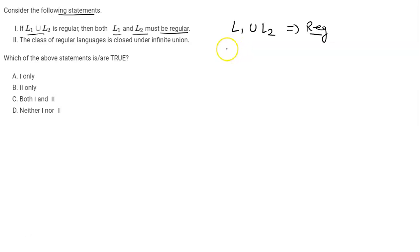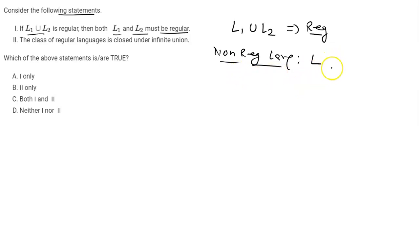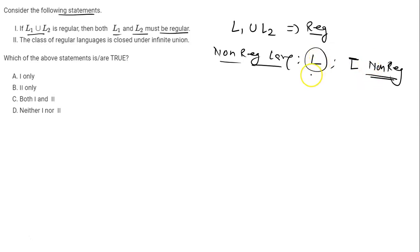This is actually not true. You can take any non-regular language L. Now, if L is non-regular, you also know that L complement is also non-regular, because the set of regular languages is closed under complementation. So if L complement were regular, then L would also be regular. That is why non-regular languages are closed under complementation — meaning if L is non-regular, then L complement will also be non-regular.